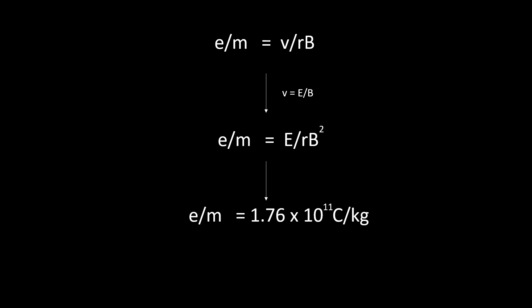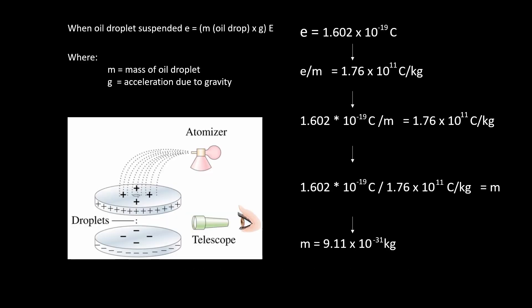This guy, called Robert Millikan, conducted experiments to measure the charge on the electron by suspending an oil droplet of known mass between parallel plates.